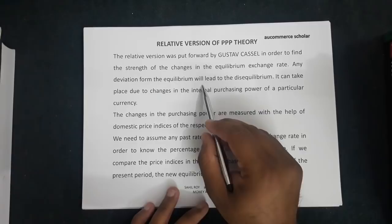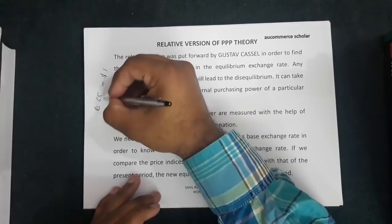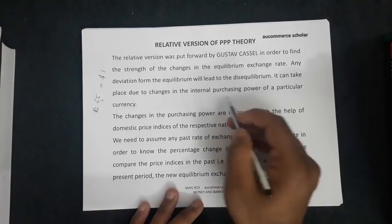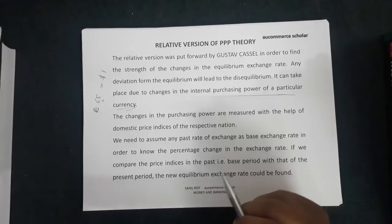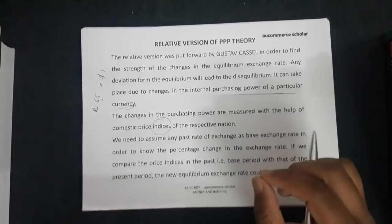Any deviation from the equilibrium will lead to disequilibrium. For example, 65 rupees equals 1 dollar — if any change comes in this, it will no longer be equilibrium, it will become disequilibrium. This can take place due to changes in the internal purchasing power of a particular currency. The changes in purchasing power are measured with the help of domestic price indices of the respective nation.